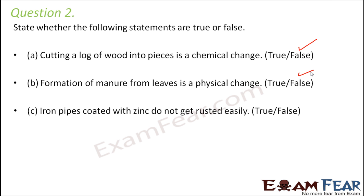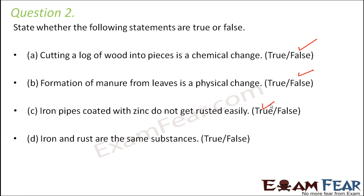Iron pipes coated with zinc do not get rusted easily — this is true. When you apply a coating of zinc, zinc does not get rusted, so it also protects the iron from rusting. This process is called galvanization. So this statement is true.